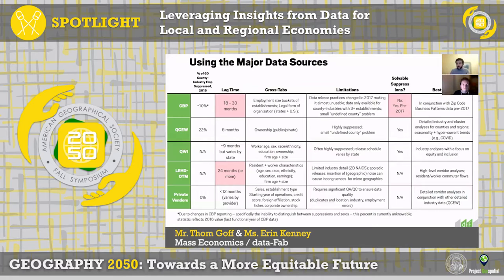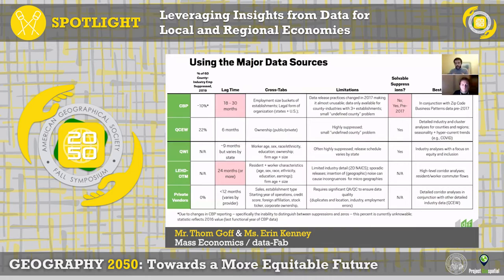QCW does have more suppressions than what county business patterns used to provide, but the nice thing is you can solve them, and we'll get to that a little bit later. QWI is a set of related datasets that's great because it offers a lot of interesting cross-tabs that really help you get at inclusion and equity concerns like age, sex, race, and educational attainment, but also more entrepreneurship-related indicators like firm age and firm size.